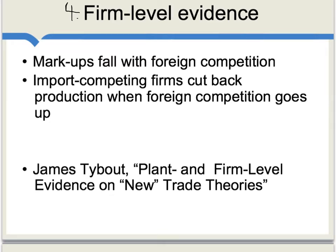There's a fourth source of evidence on behalf of increasing returns to scale theories, and this is somewhat more illustrative: firm-level evidence. Rather than looking at different industries or sectors, we look at the behavior of individual firms, and we find a number of results which appear to suggest that in the arena of international trade, there's a lot of market power. Markups are falling with foreign competition, import-competing firms are cutting back their production when foreign competition goes up, and all in all, the entire package of propositions about individual firm behavior seems fairly compatible with a model of monopolistic competition and differentiated products.